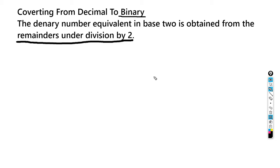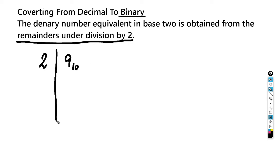So let's do an example. Let's start with nine. Let's look at the number nine in base 10 and we want to convert this to base two. The first thing we're going to do is divide this nine by two. I'm going to draw a long line here because we're going to be doing a lot of divisions. We're going to divide this nine by two and we should get four with a remainder of one.